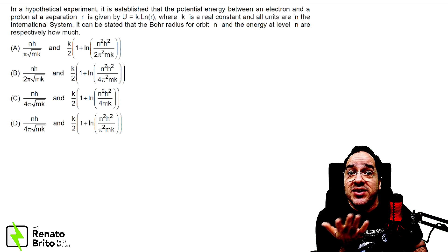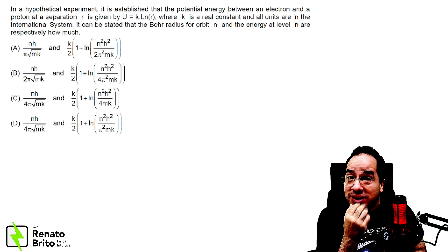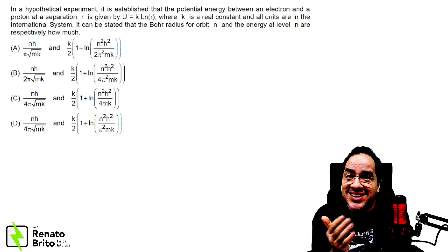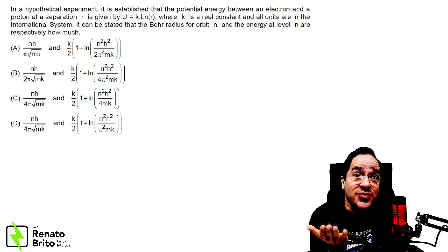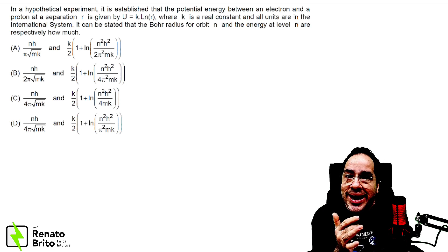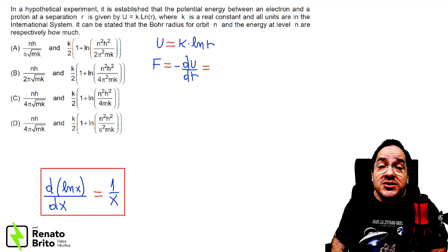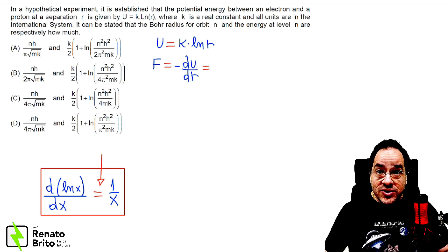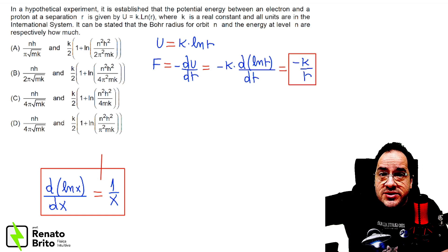We are given the expression for the potential energy between the electron and the proton, and this expression is absolutely different from the electric potential energy, so we can realize this is not an electric force. In order to find the expression of this force, we must calculate the derivative of this potential energy with respect to the distance r. Remember that the derivative of the natural log of x with respect to x is 1 over x. The derivative will be minus k over the distance r.